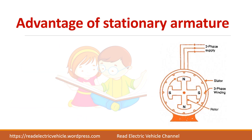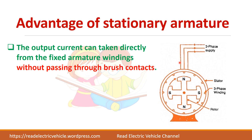Let us see the advantage of having a stationary armature. From the diagram we can see that the stator is stationary and the output terminals are taken out from it directly. Since the stator is stationary, the output current can be taken directly without passing through brush contacts. In a DC generator, the output is taken from the rotating armature terminals, passed through a commutator and brushes.